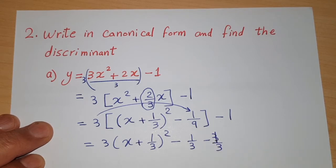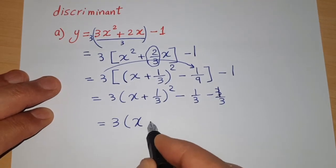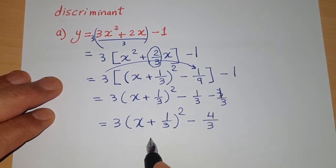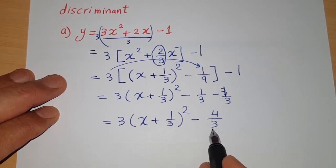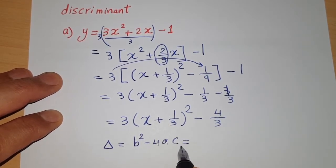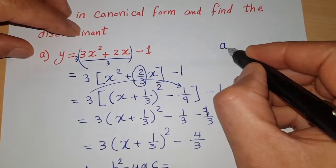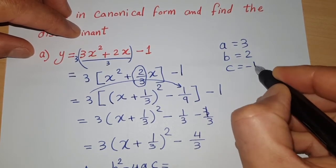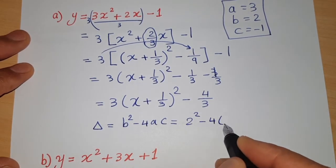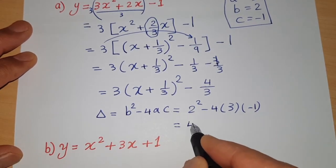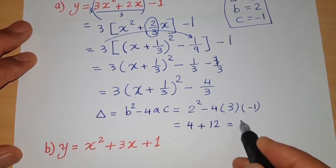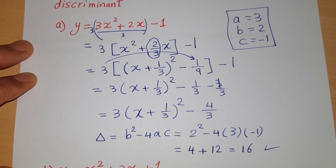The final canonical form is 3(x + 1/3)² - 4/3. The vertex is (-1/3, -4/3). For the discriminant, delta = b² - 4ac. With a = 3, b = 2, c = -1: delta = 2² - 4(3)(-1) = 4 + 12 = 16.